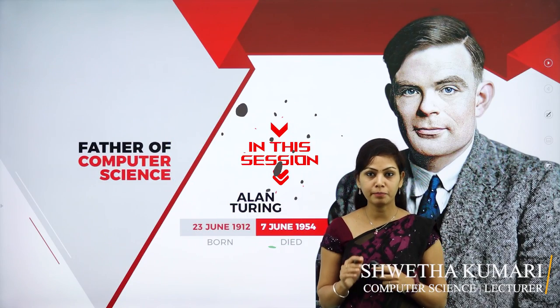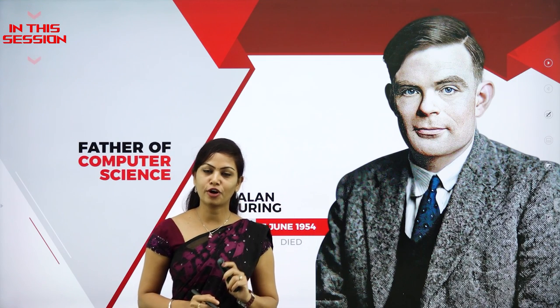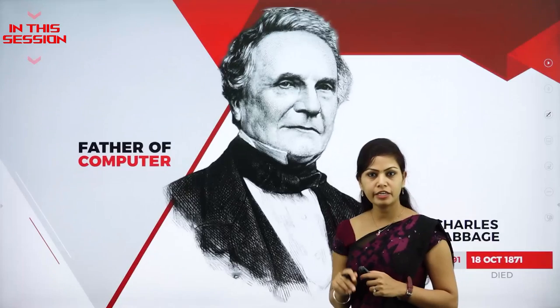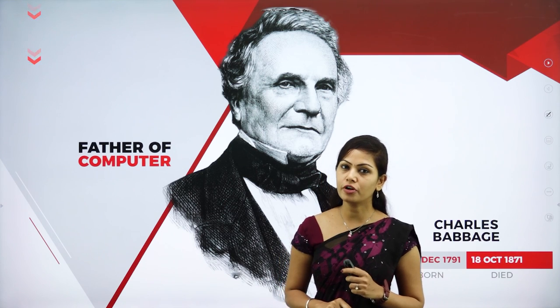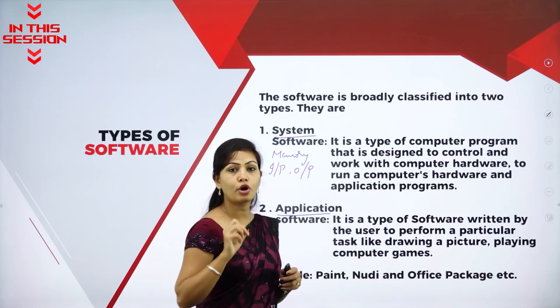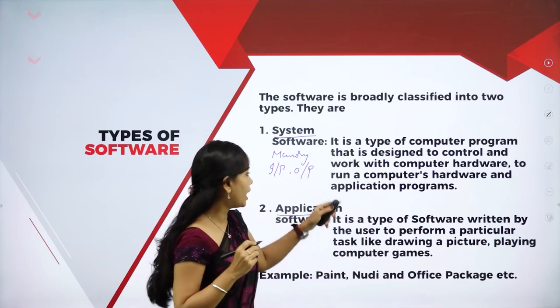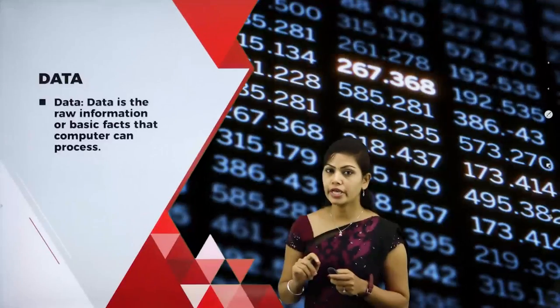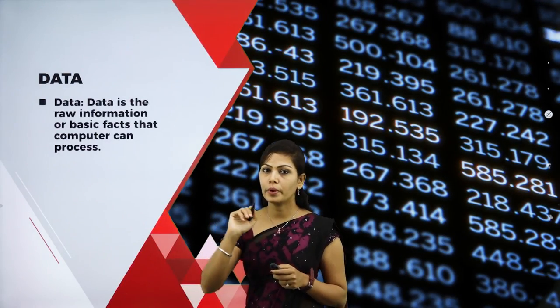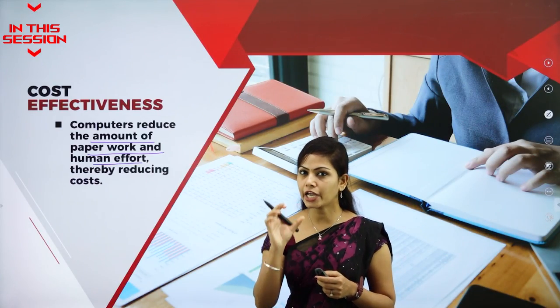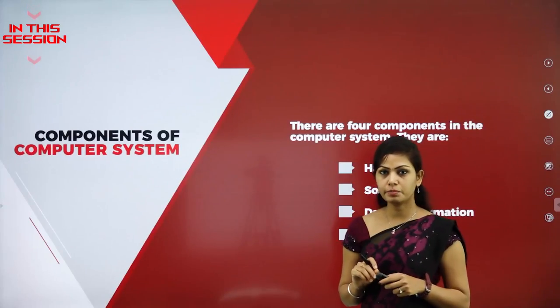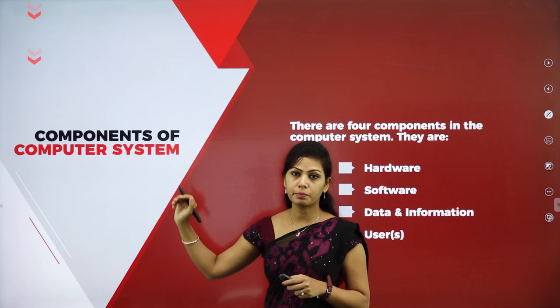Computer science is a study of computation and information. Who is the father of computer science? Alan Turing. He invented the analytical engine for calculations. System software is used to control and manage hardware resources. The next important concept is components of computer system.